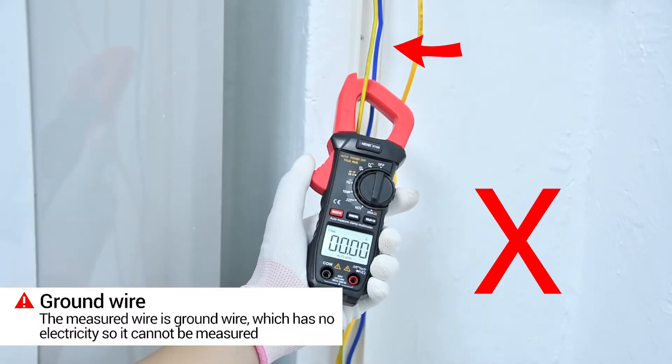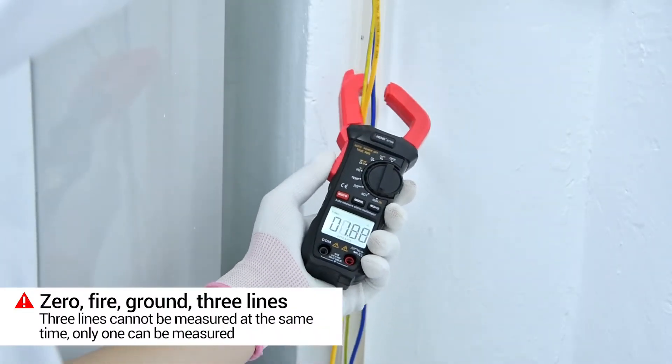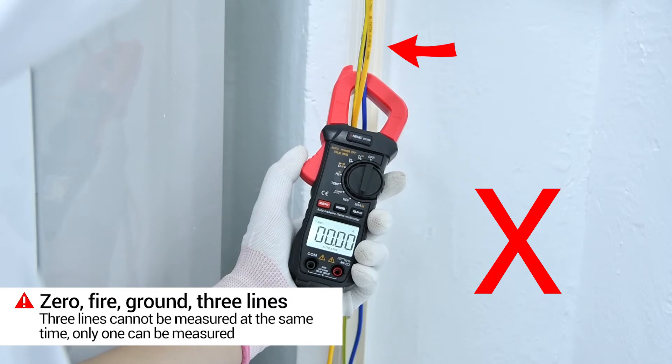The line on test is ground. It has no electricity. Ground, live zero line, three lines together cannot be measured.